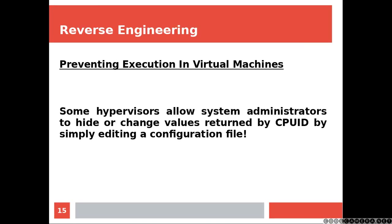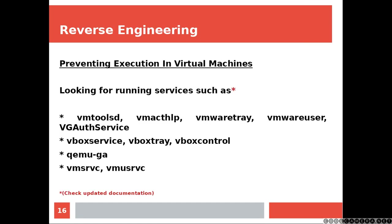Bear in mind that some hypervisors allow system administrators to change values returned by CPUID by simply editing a configuration file. That's the reason why you should use multiple techniques to make sure your application is actually running in a virtual machine. You can also look for service names — those are the services that VMware generally installs, those are the ones for VirtualBox, QEMU, and VirtualPC.